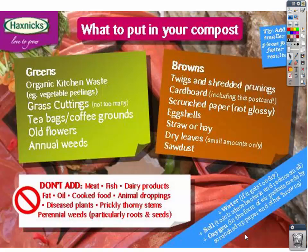This slide shows some of the things you can put in your compost regarding greens and browns. Greens include organic kitchen waste, grass cuttings, tea bags — though not all tea bags are compostable — old flowers, and weeds. Browns include twigs, cardboard, eggshells, straw and hay, and sawdust.